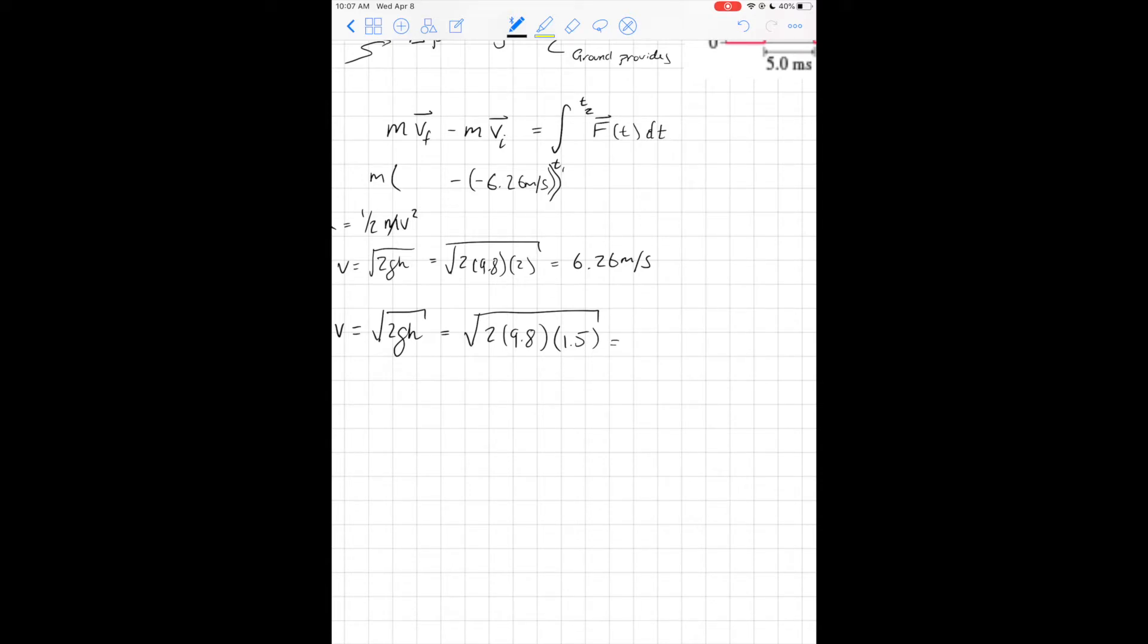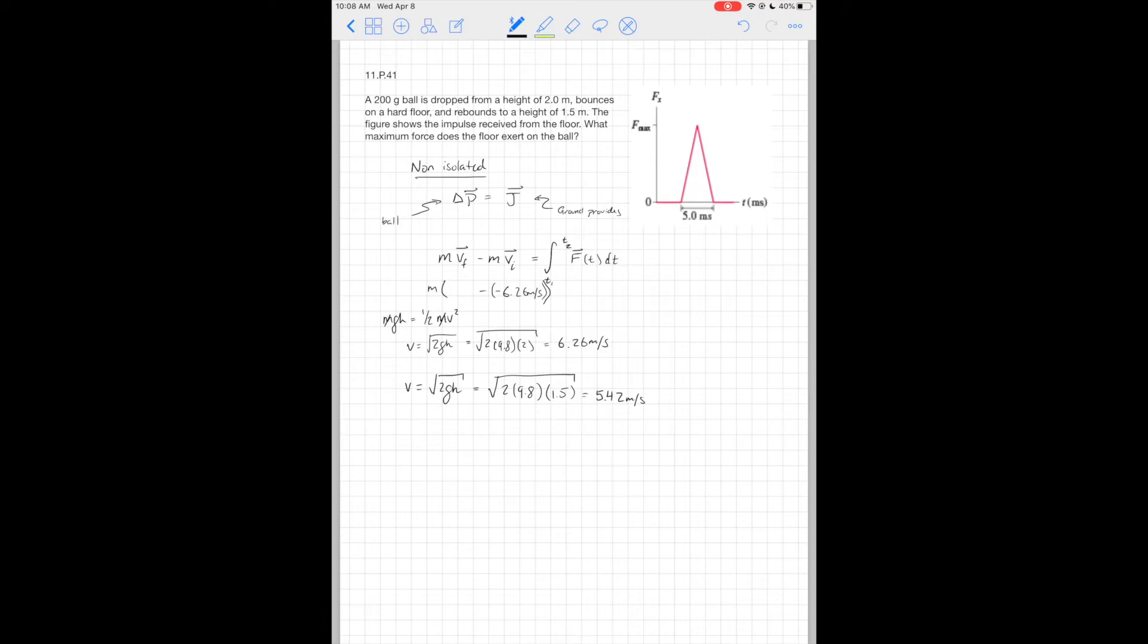Let's plug it into our calculator: 3 times 9.8, take a square root, I get 5.42 meters per second. That makes sense. This is good. Normally when we have a collision like this, we usually don't get back up to the same position. We expect a lower velocity; we lose some energy here.